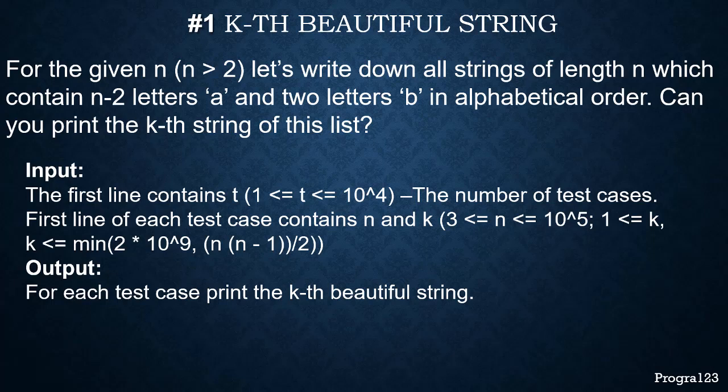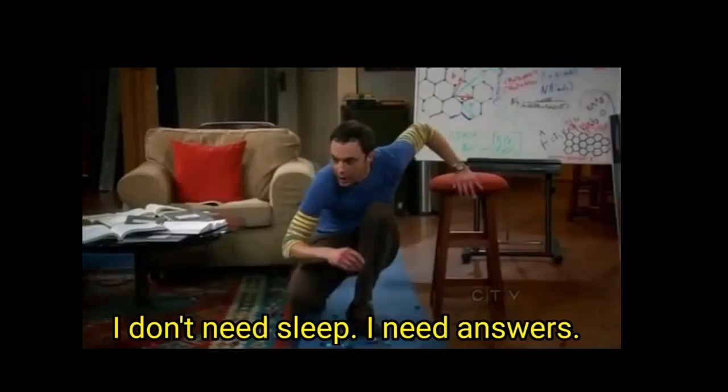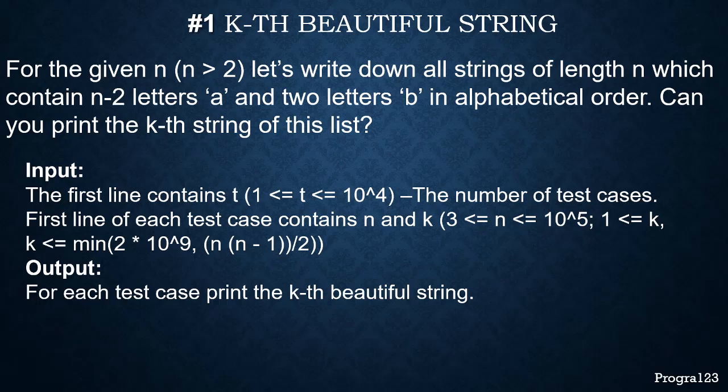In this problem they are going to ask us for the kth string from a list of strings that we are going to generate according to these rules. For a given n greater than 2, we're going to write all the strings formed by n minus two letters A and two letters B in alphabetical order, meaning this list of strings is going to be sorted. In the input we are going to have the number of test cases, and for each test only one line telling us the values of n and k.